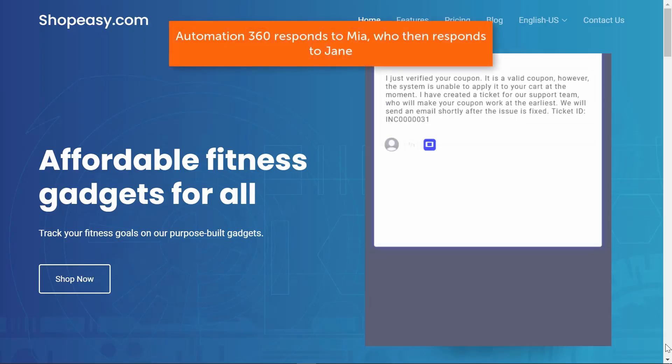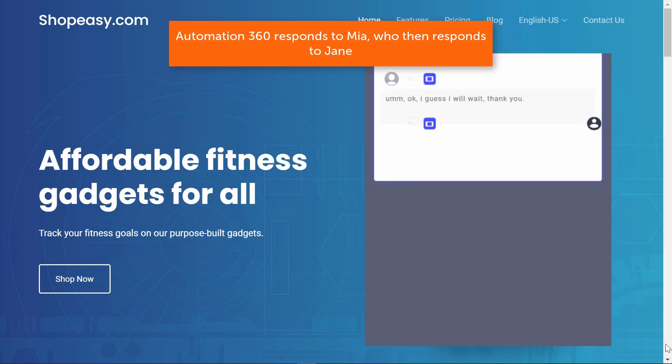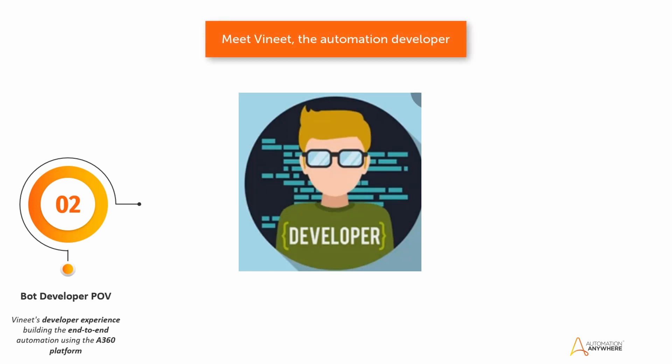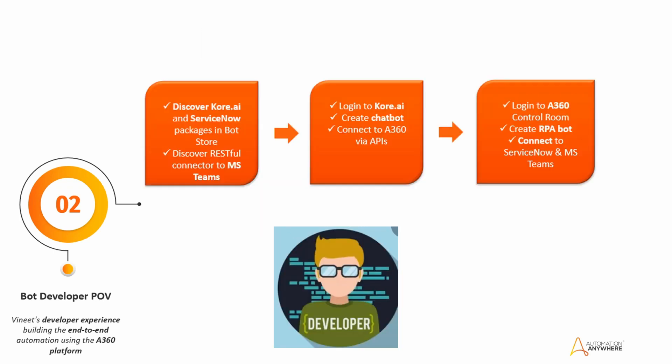Now let's get back to Mia and see the bot response to the customer. Mia has now received confirmation that the coupon was valid and an incident ticket has been created to resolve the coupon code issue for Jane. Now let's see how easy it is to create the entire automation end-to-end by leveraging pre-built packages from the bot store and also using A360's powerful API capabilities to integrate with conversational AI and external applications.